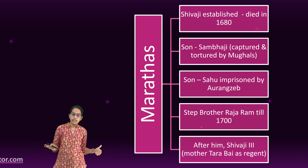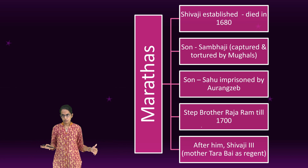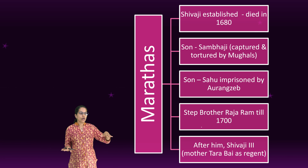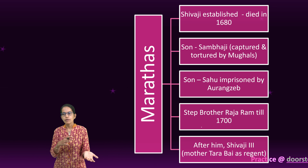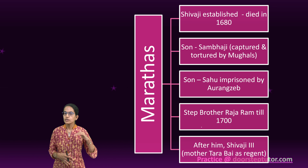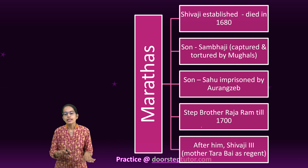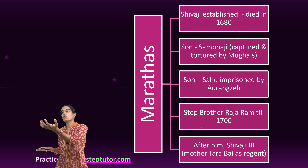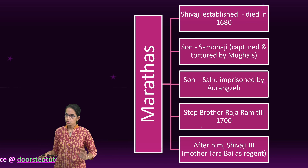Then the son of Raja Ram, Shivaji III, came to power. But the actual rule was by his mother Tarabai. When Aurangzeb died, Sahu was released by Bahadur Shah I. When Sahu was released, Sahu and Tarabai had a conflict, and finally Sahu won power.